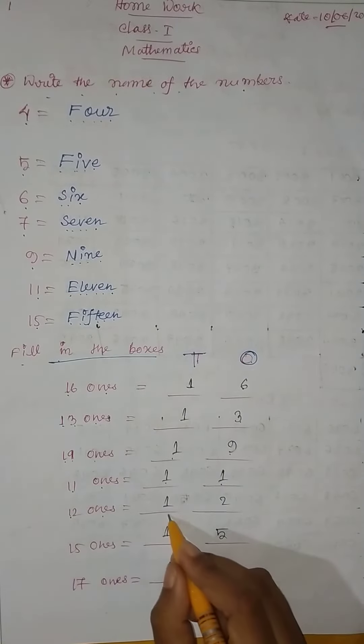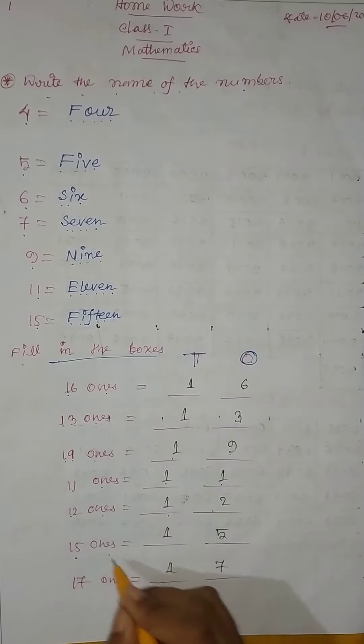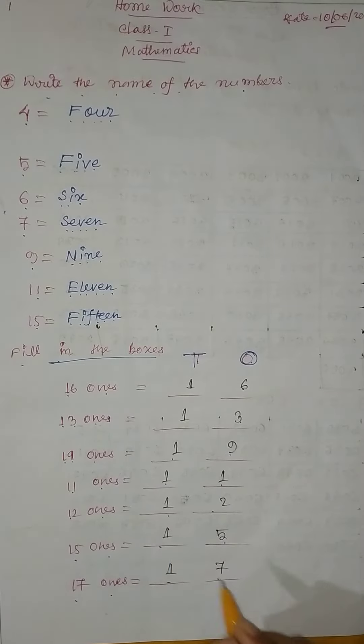12 ones: 1, 2. 15 ones: 1, 5. 17 ones: 1, 7.